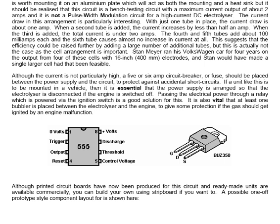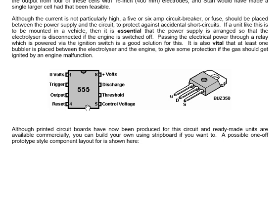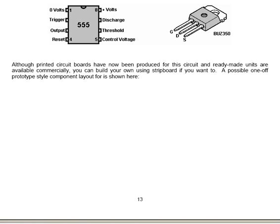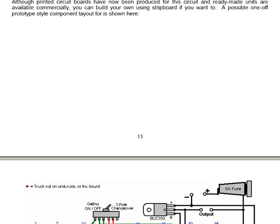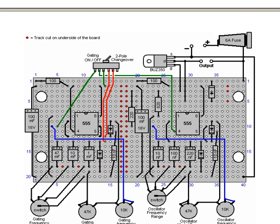The physical connections to 555 chips and the BUZ350 field effect transistor are shown here in this diagram. Although printed circuit boards have now been produced for the circuit and ready made units are available commercially, you can build your own using strip board if you want to. A possible one-off prototype style component layout is shown here. The red dots in this indicate where the horizontal copper strips on the underside of the plastic board are broken so the red dots show the break in the horizontal copper strips on the underside of the board. That is an arrangement which works perfectly well with the circuit.